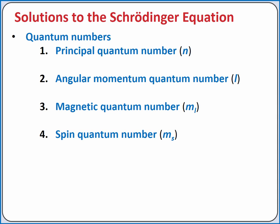Each orbital is designated by three quantum numbers: the principal quantum number, angular momentum quantum number, and magnetic quantum number. A fourth quantum number, the spin quantum number, designates an electron within the orbital.